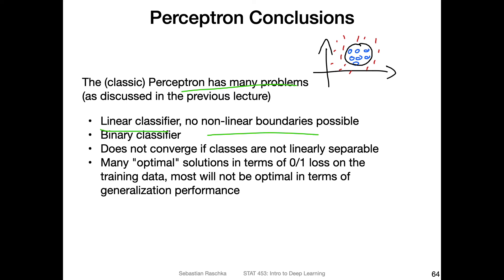Another shortcoming is that it is a binary classifier — it can only classify two classes. There are extensions using multiple perceptrons: one method is called one-versus-rest (also called one-versus-all) and another is one-versus-one, to achieve multi-class classification. But a single perceptron cannot do multi-class classification because it only returns either a zero or a one.